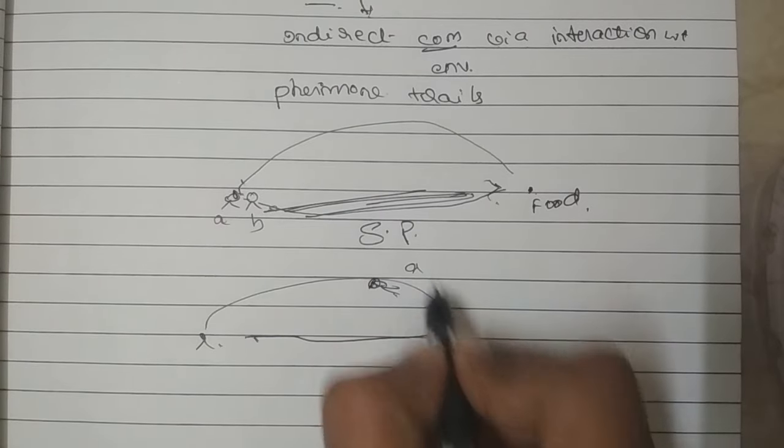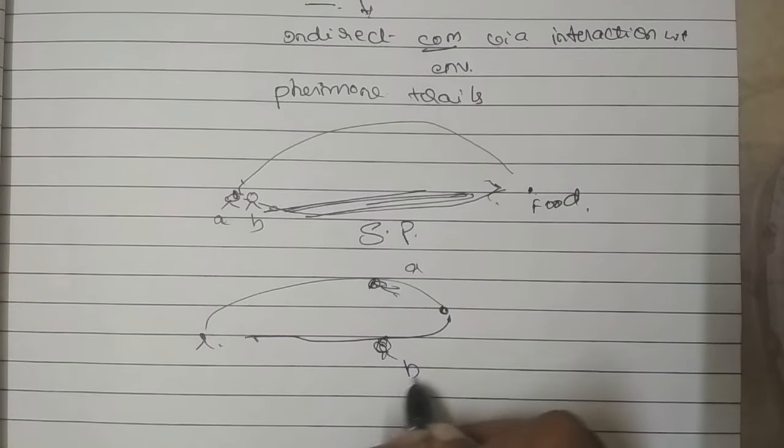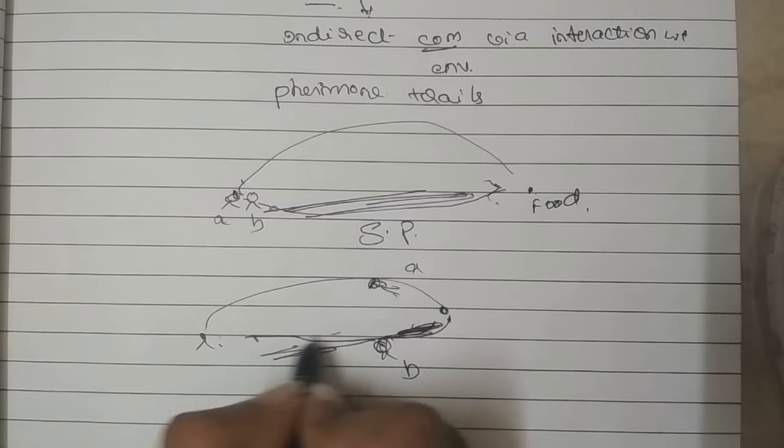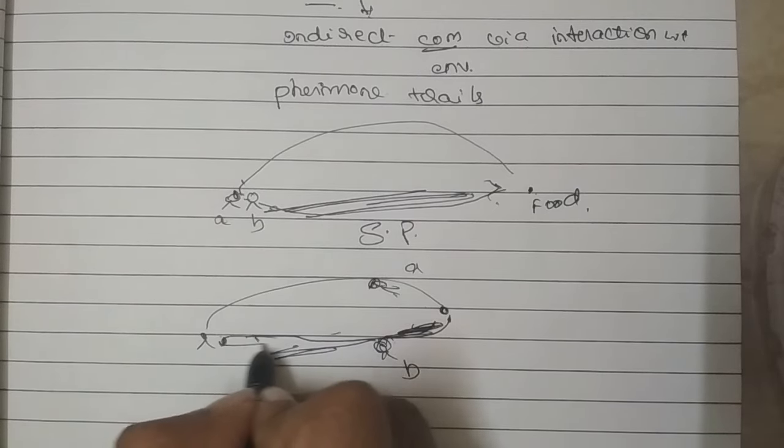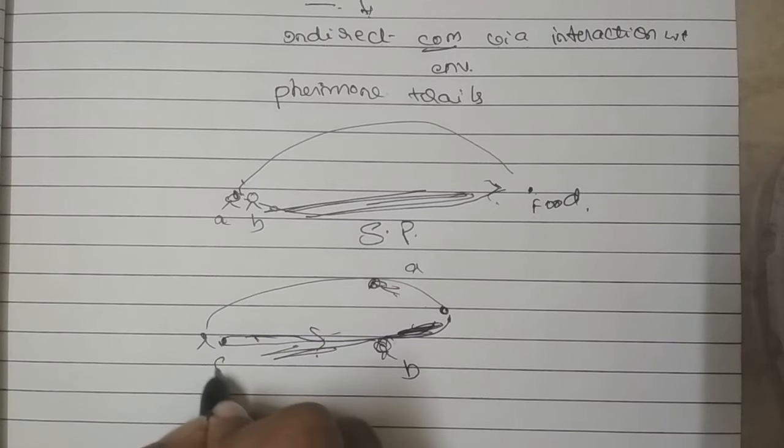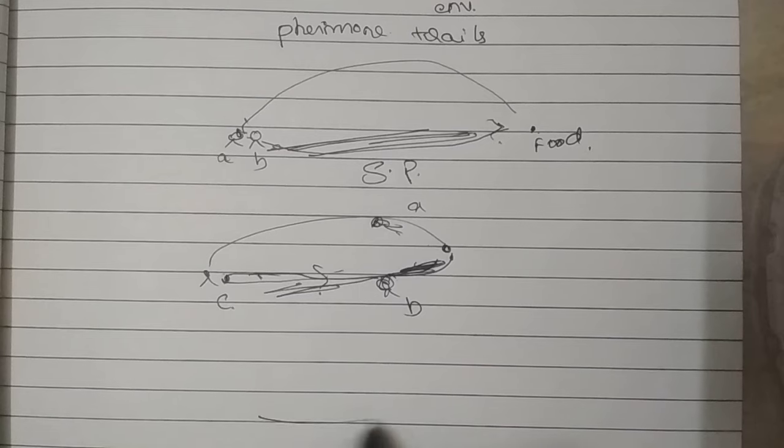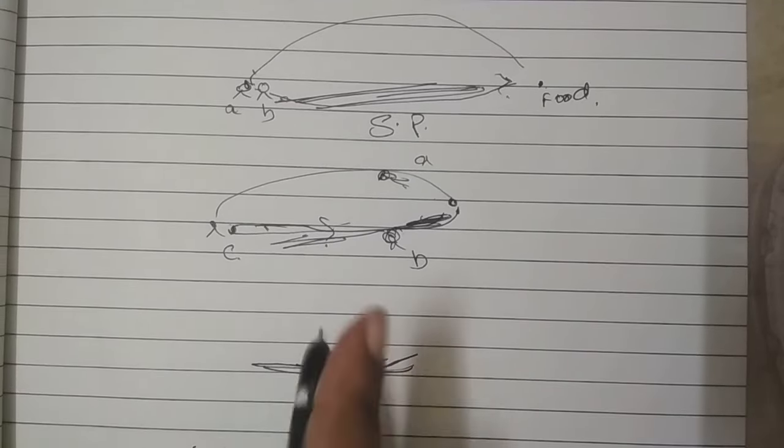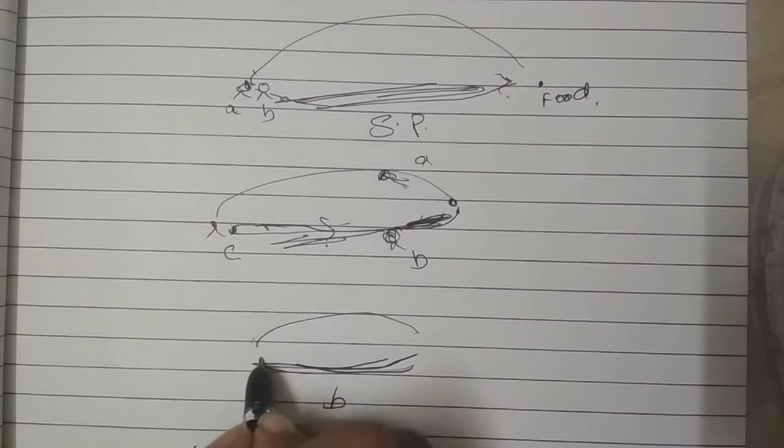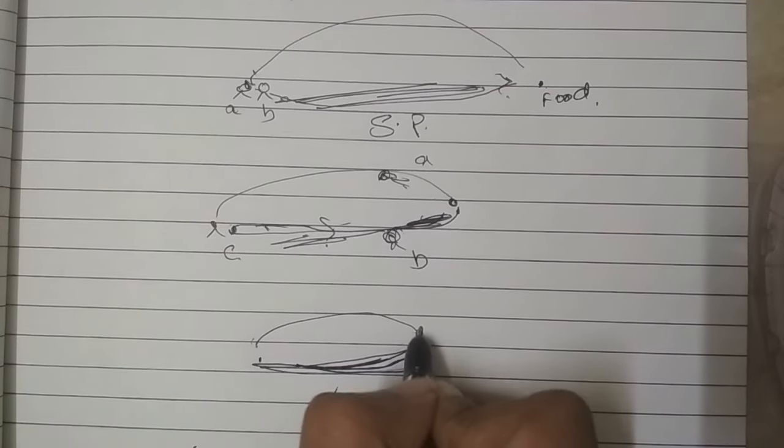And this ant will be coming back. Here is the food, and another, this is ant A, this is ant B. This is ant A, this is ant B, it is also coming back. So this path will become darker. So this will reach this ant first, and this ant will follow this path, this is ant C. So after some continuous iteration, so this path B will be more useful than path A.